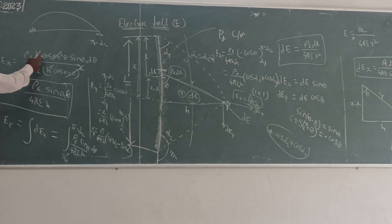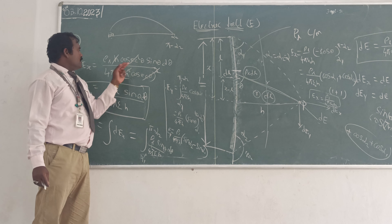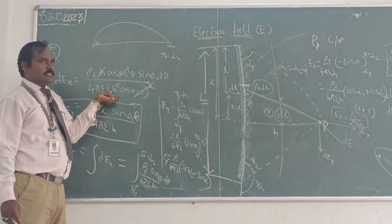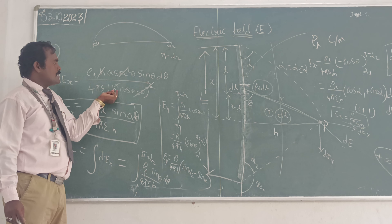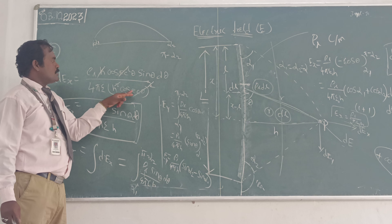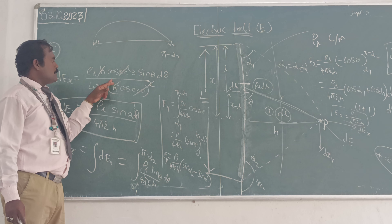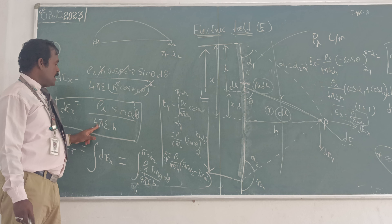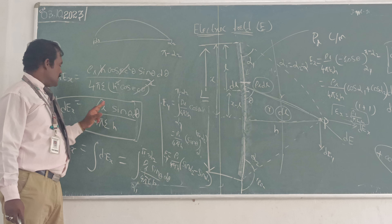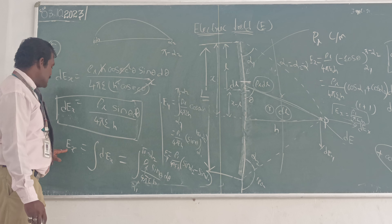Substituting dL and R into equation 1, dEx becomes rho L times H divided by cos squared theta, times sin theta times d theta, divided by 4 pi epsilon times R squared. When we replace R with H divided by cos theta and square it, H squared cos squared theta cancels with the numerator and H also cancels, leaving rho L divided by 4 pi epsilon H, times sin theta times d theta.